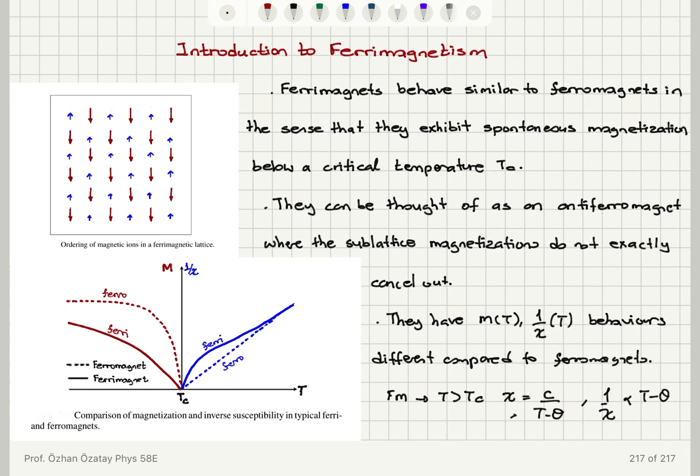And you can see that in ferromagnets above Tc we have the paramagnetic phase where chi is c over T minus theta. Ferrimagnets approach this behavior at higher temperatures. In ferromagnets the magnetization drops a little bit fast compared to ferrimagnets where the drop in magnetization is not as steep.